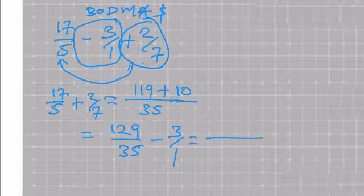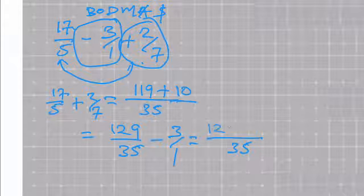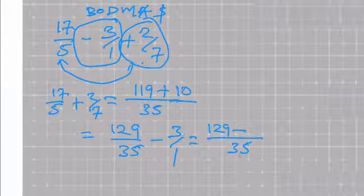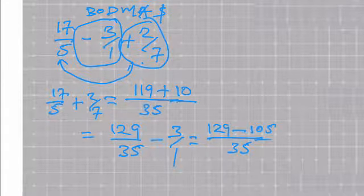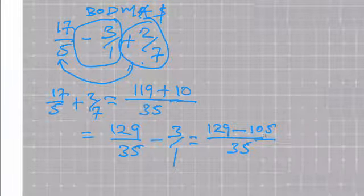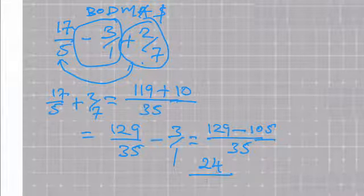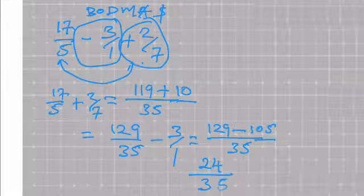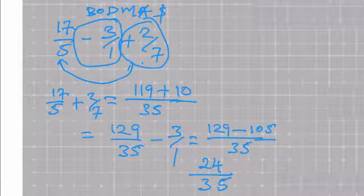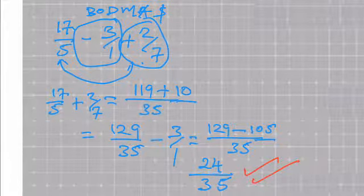What remains is the final subtraction. To this result we subtract 3 over 1. The LCM is still 35: 35 once gives 129, minus 35 times 3 is 105. So 129 minus 105 gives you 24 over 35. This cannot be simplified further, and so this becomes your answer for that question.